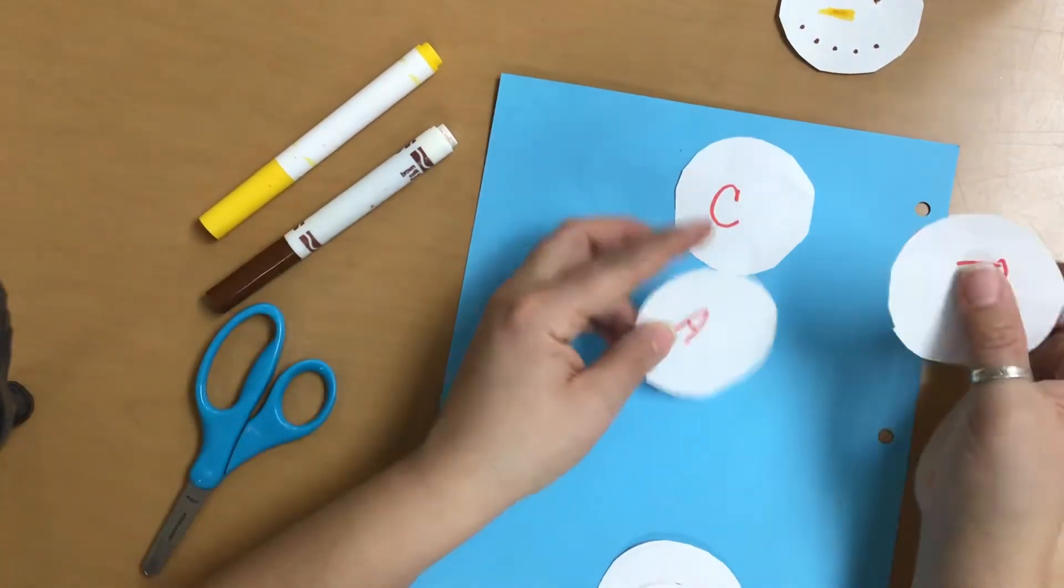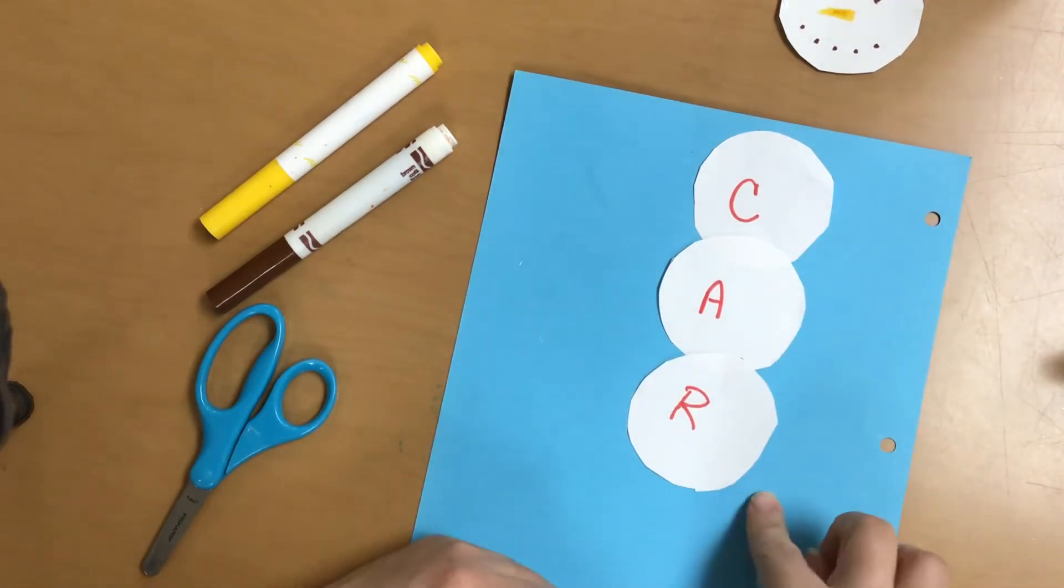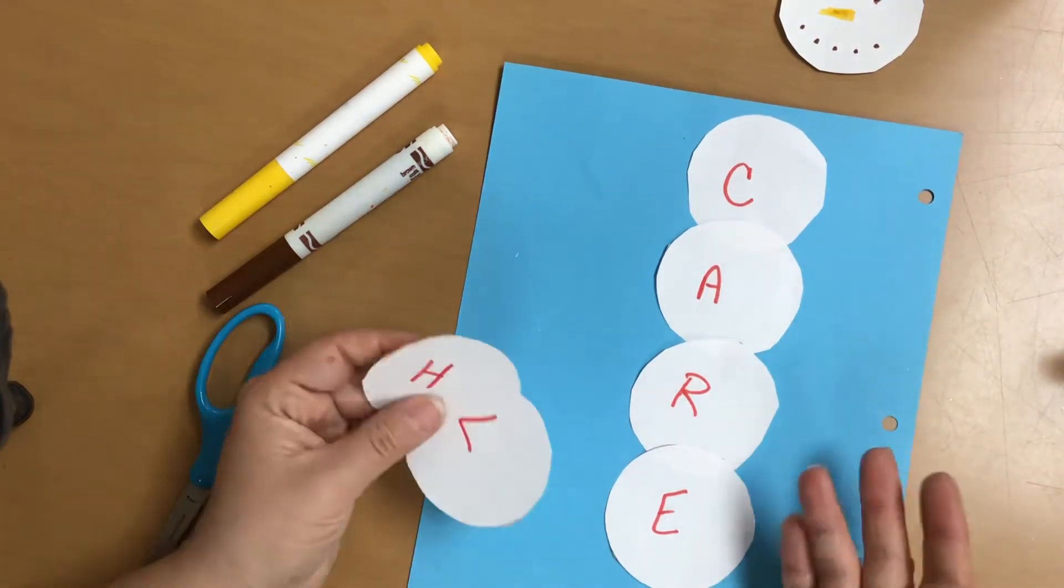I can do C-A-R. That spells car. C-A-R. And if I put an E on there, that says care. I'm like, I care about you guys.